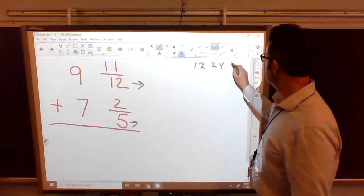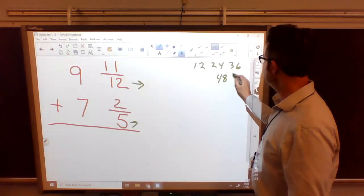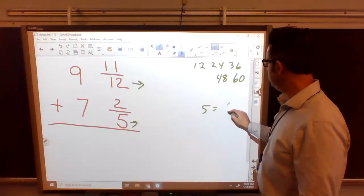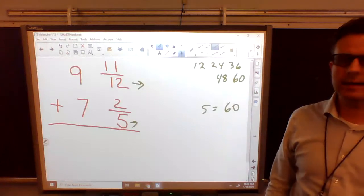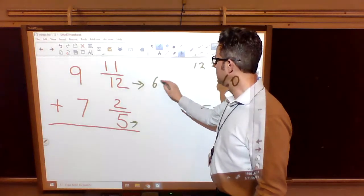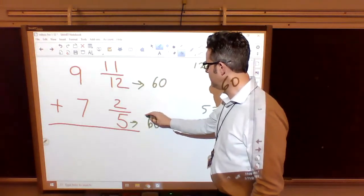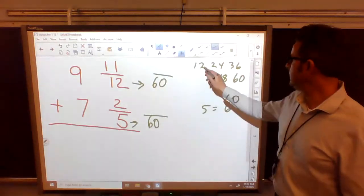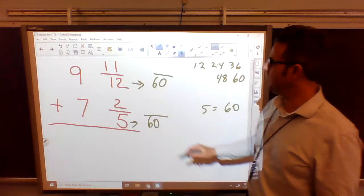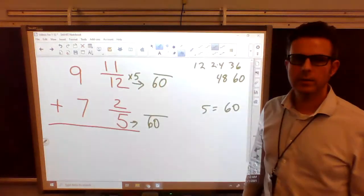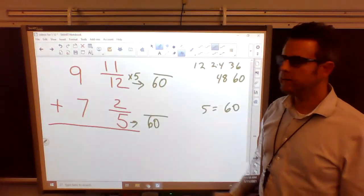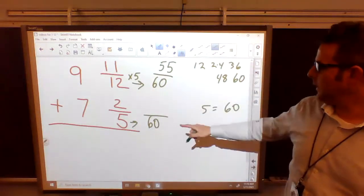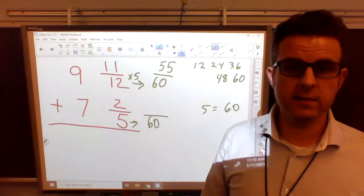12, 24, 36, 48, 60. If you count by 5, eventually you'll get to 60. So our least common multiple is 60. We have to turn them both into 60s. How do we get from 12 to 60? 1, 2, 3, 4, 5. It's 12 times 5. Well, we have to do the 11 times 5 too. 11 times 5 is 55. How do we get from 5 to 60? It is times 12.